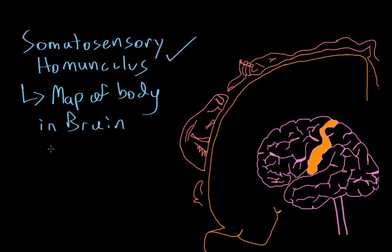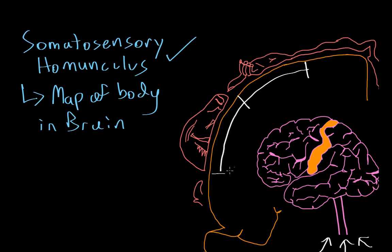So the sensory homunculus basically maps out the body in the brain. Information from the hand synapses in this region of the cortex, information from the face synapses in this region, and information from the feet synapses in this region. What this effectively creates is a topological map of the entire body in this strip of cortex — and this topological representation of the body in the cortex is what's known as the somatosensory homunculus.